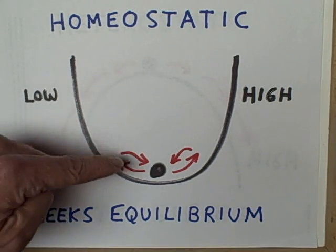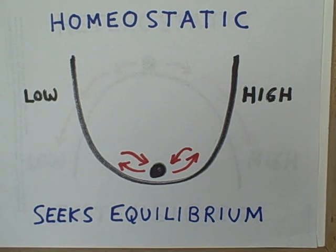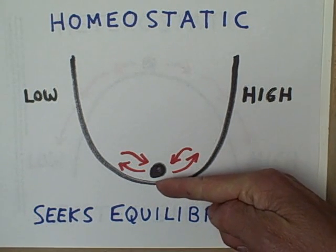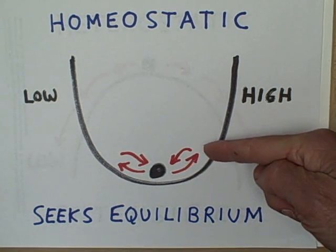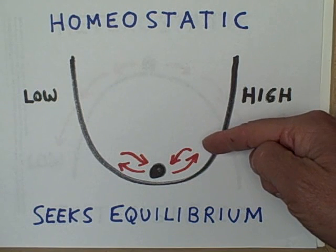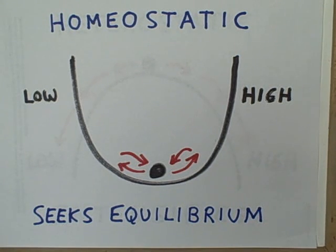Imagine that this diagram you see here is a soup bowl, and imagine that there is a marble in the bottom of the soup bowl. Suppose we have this soup bowl on the floor of our car and we're driving around town — accelerating, coming to a stop sign, turning right, turning left. As we move around, the forces of acceleration and momentum will cause the marble to move up one side or the other. But as soon as it moves up either side, the force of gravity will counteract that movement and try to bring the marble back down to the bottom of the soup bowl.